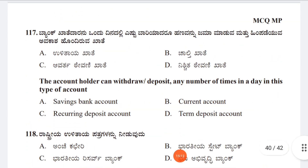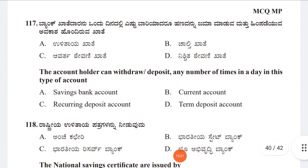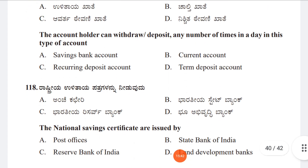Question 117: The account holder can withdraw and deposit any number of times in a day in which type of account? Option A: Saving Bank Account, Option B: Current Account, Option C: Recurring Deposit Account, Option D: Term Deposit Account. The correct answer is Option B, Current Account.